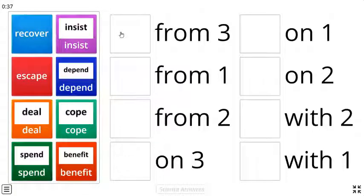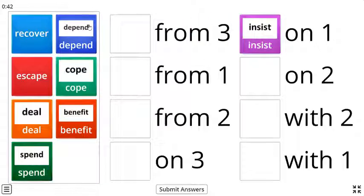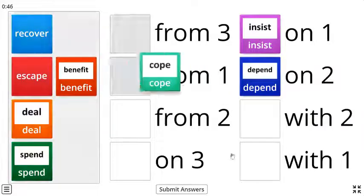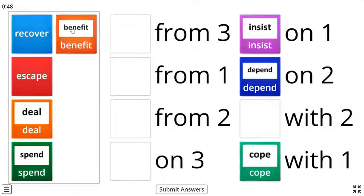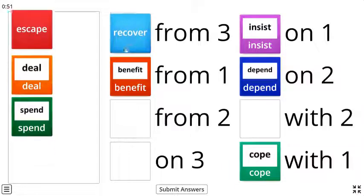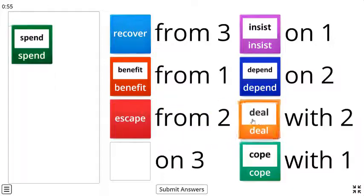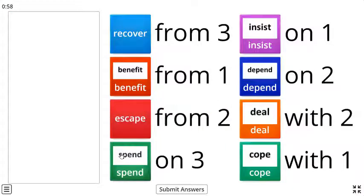So we insist on, we depend also on, we cope with, we benefit from, we benefit from, we recover from and we escape from, we deal with and we spend on. Remember, we will consider correct each correct matching because it's correct. Let's submit our answers.